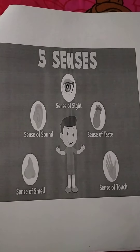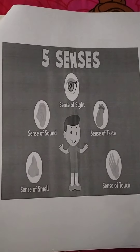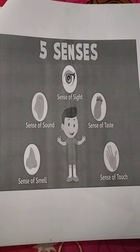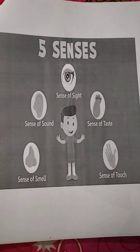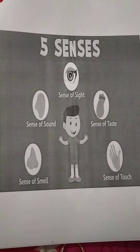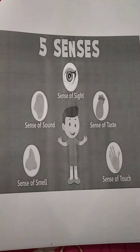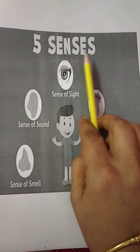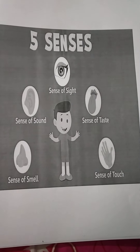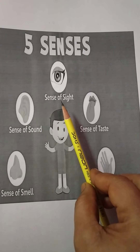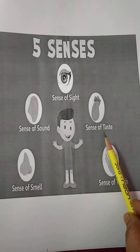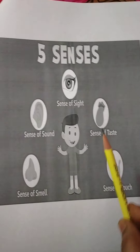Hello my dear students, today I am going to teach you about senses — what is going around us. We have five ways to know what is happening around us, and that is called senses. The five senses are: sense of sight, sense of sound, sense of taste, sense of smell, and sense of touch.